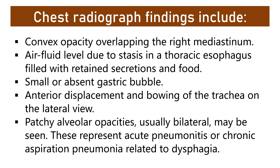Chest radiograph findings include a convex opacity overlapping the right mediastinum, an air-fluid level due to stasis in a thoracic esophagus filled with retained secretions and food, a small or absent gastric bubble, and anterior displacement and bowing of the trachea on the lateral view. Patchy alveolar opacities, usually bilateral, may also be seen, representing acute pneumonitis or chronic aspiration pneumonia related to dysphagia.